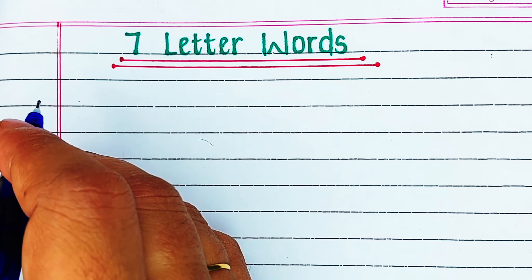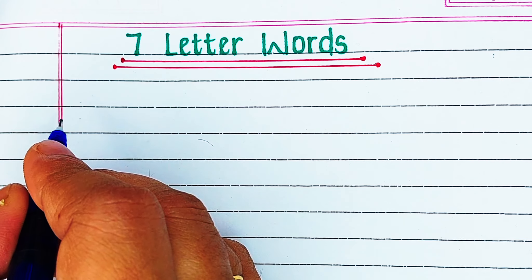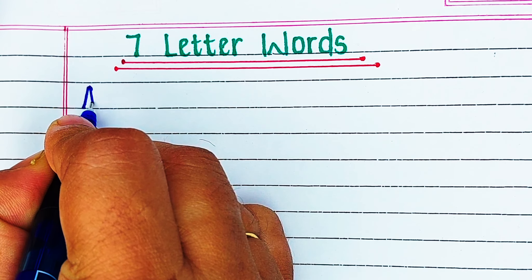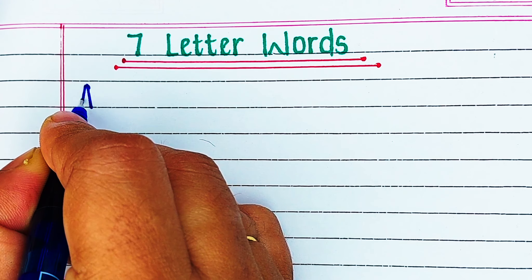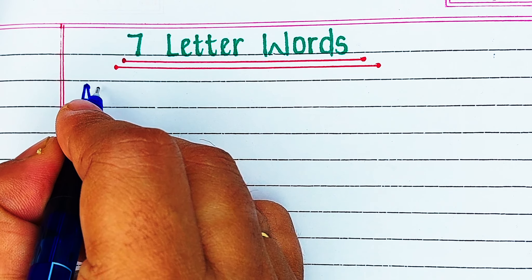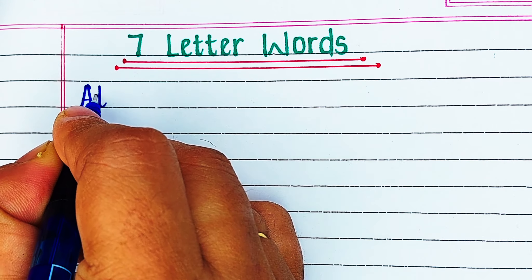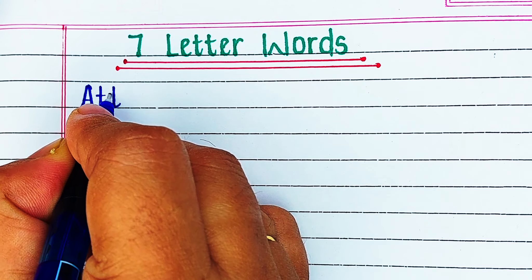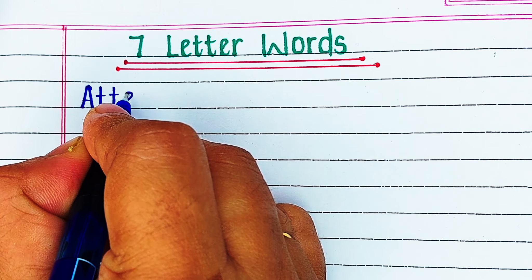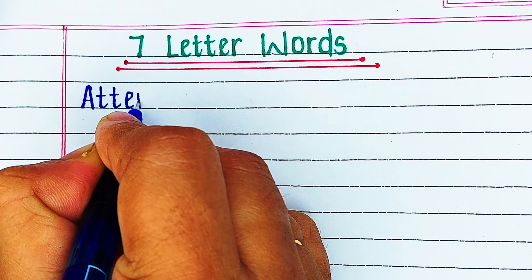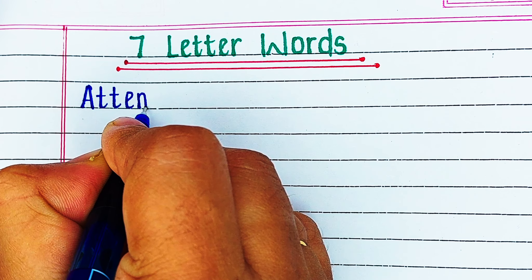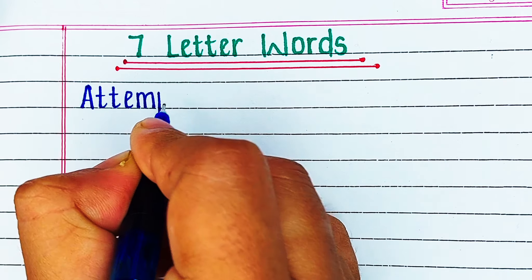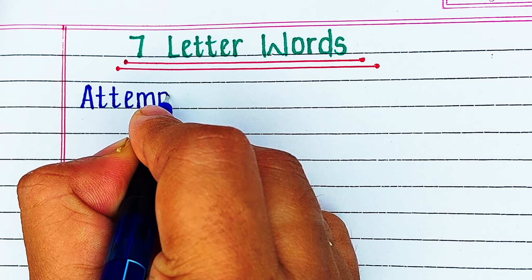Hello viewers, welcome to our channel Try to Learn. In this video we will learn and write 7 letter words starting from alphabet A to Z. If you find this video helpful please hit the like button and for more such videos consider subscribing to our channel Try to Learn.